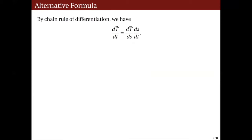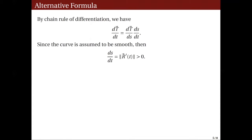Now let us obtain an alternative formula that will not require an arc-length parametrization. We can do this by applying the chain rule of differentiation. Recall that in the previous lecture, we are able to relate the arc-length parameter S with an arbitrary parameter T. With that relation, the derivative of the unit tangent vector T with respect to T equals the derivative of T with respect to S multiplied by dS/dt. Since the curve is assumed to be smooth, R'(t) is never zero, and hence its norm is always positive. The norm of R'(t) from the previous lecture is equal to dS/dt. Because dS/dt is never zero, I can divide both sides by dS/dt.